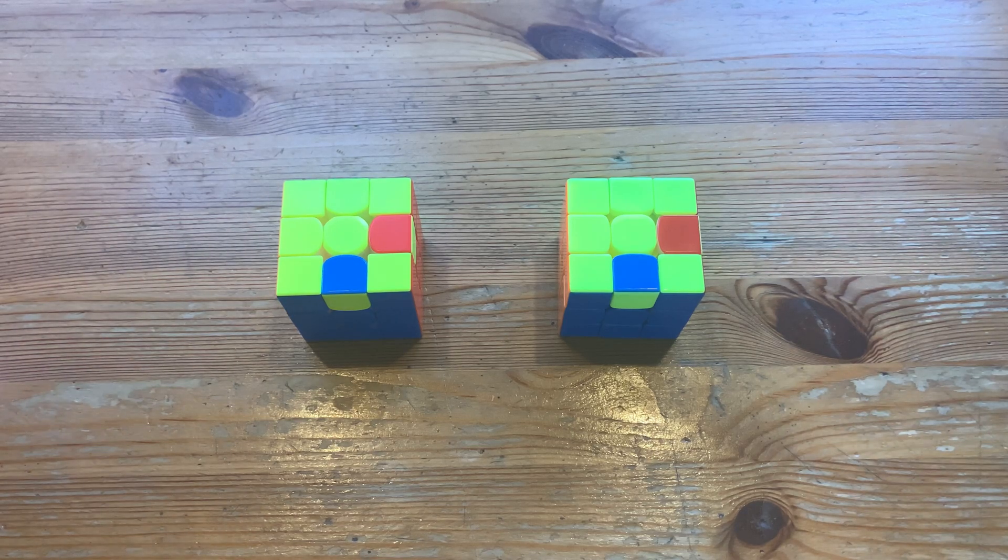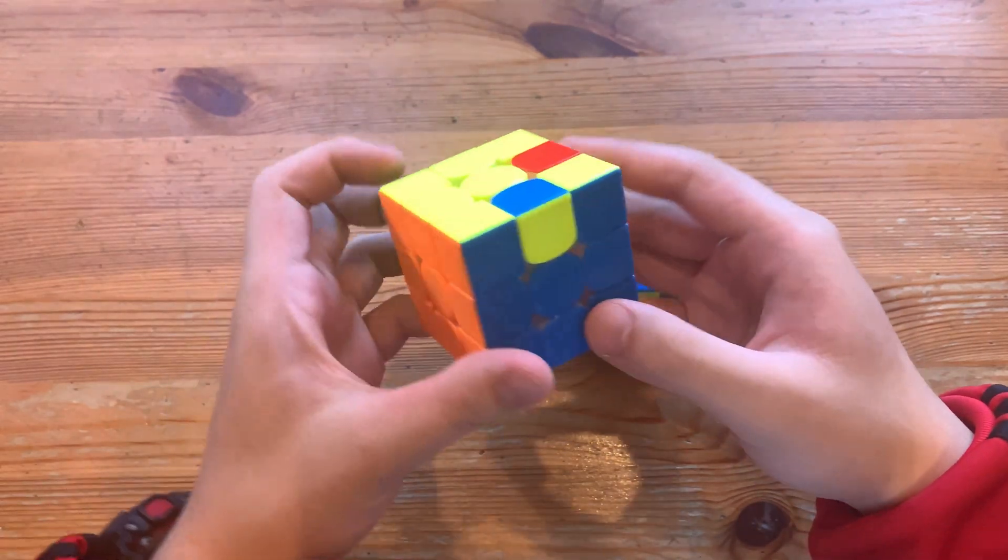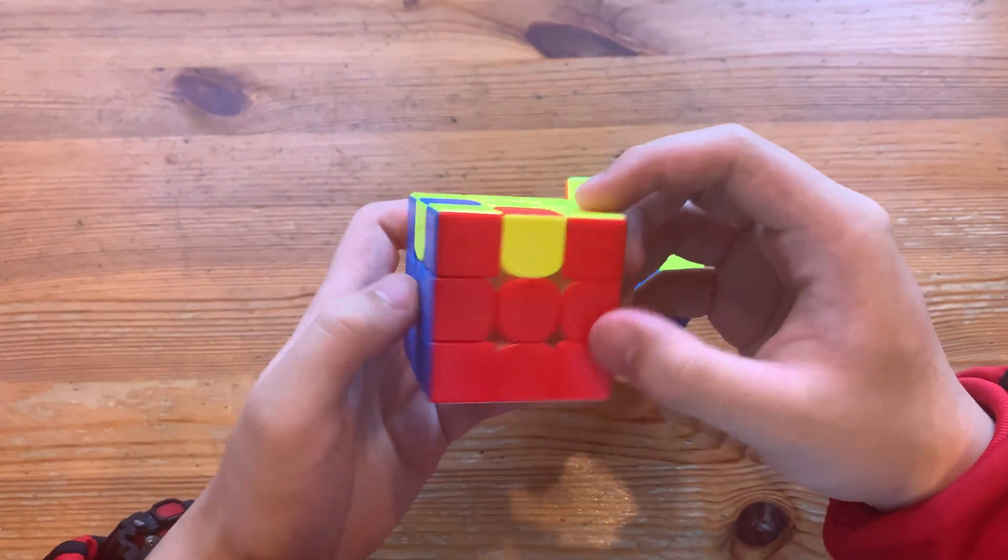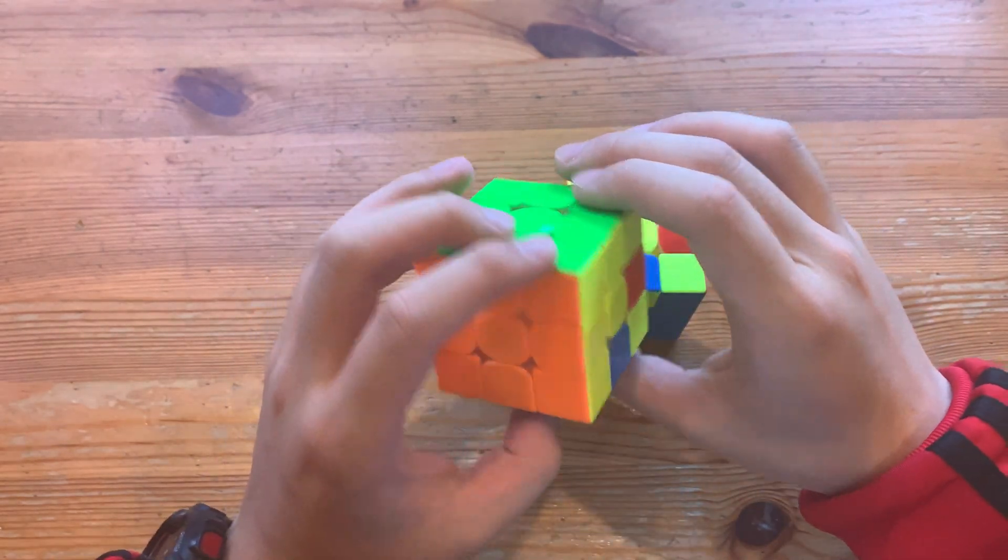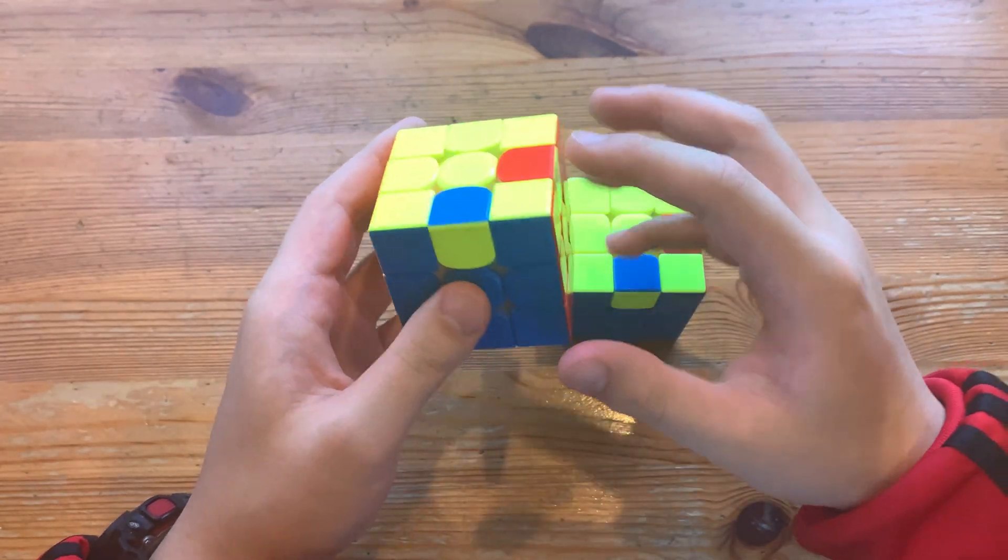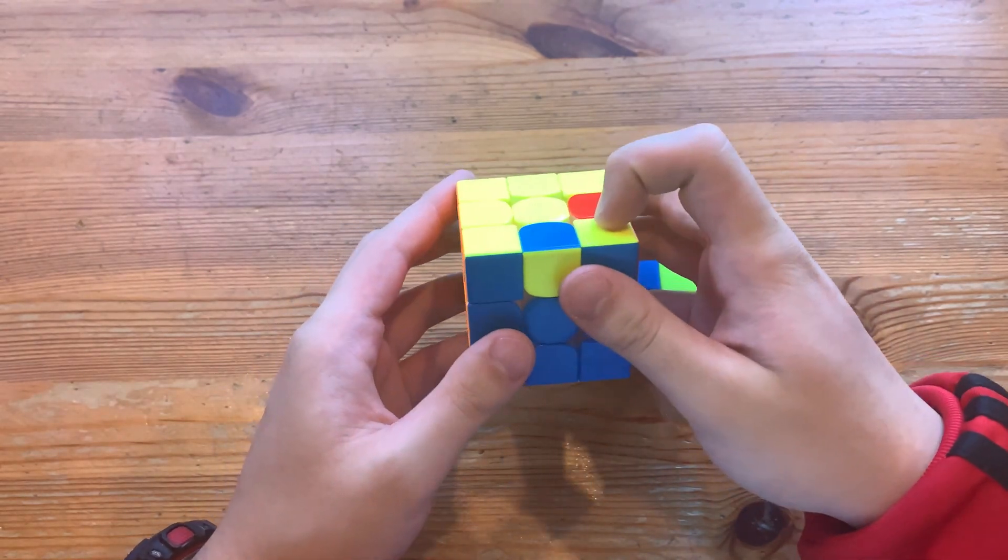Guys, this will be two ways to solve this easy ell case, and both algorithms are 13 moves. You recognize that all of your pieces are permuted but these two edges are not oriented. So basically all the pieces are in the right place but these two need to be flipped.